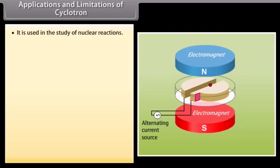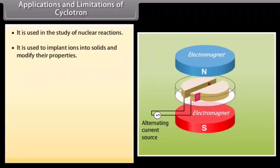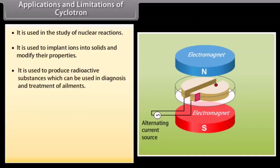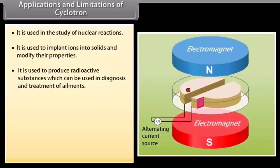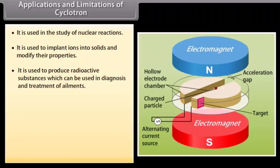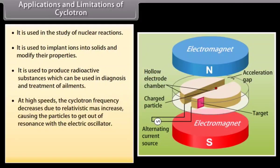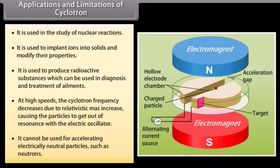Applications and limitations of cyclotron: It is used in the study of nuclear reactions. It is used to implant ions into solids and modify their properties. It is used to produce radioactive substances for diagnosis and treatment of ailments. At high speeds, the cyclotron frequency decreases due to relativistic mass increase, causing particles to get out of resonance. It cannot be used for accelerating electrically neutral particles such as neutrons.